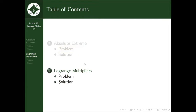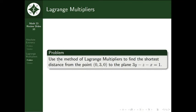Problem 2 introduces Lagrange multipliers. We need to use the method of Lagrange multipliers to find the shortest distance from the point (0, 3, 0) to the plane 3y - z - x = 1. It's more clear if we reword this as: find the point on the plane closest to (0, 3, 0), then compute the distance between those two points.